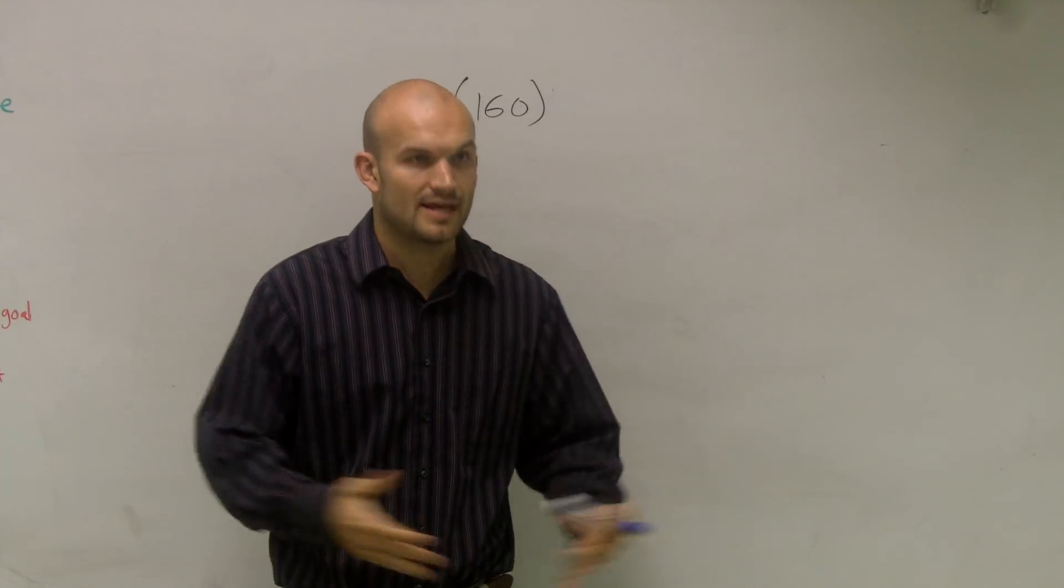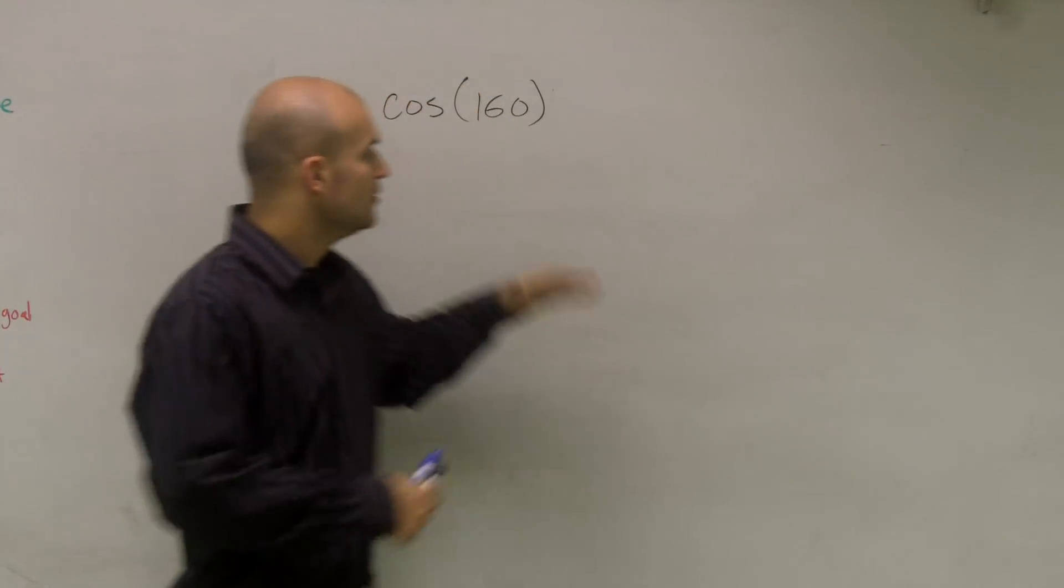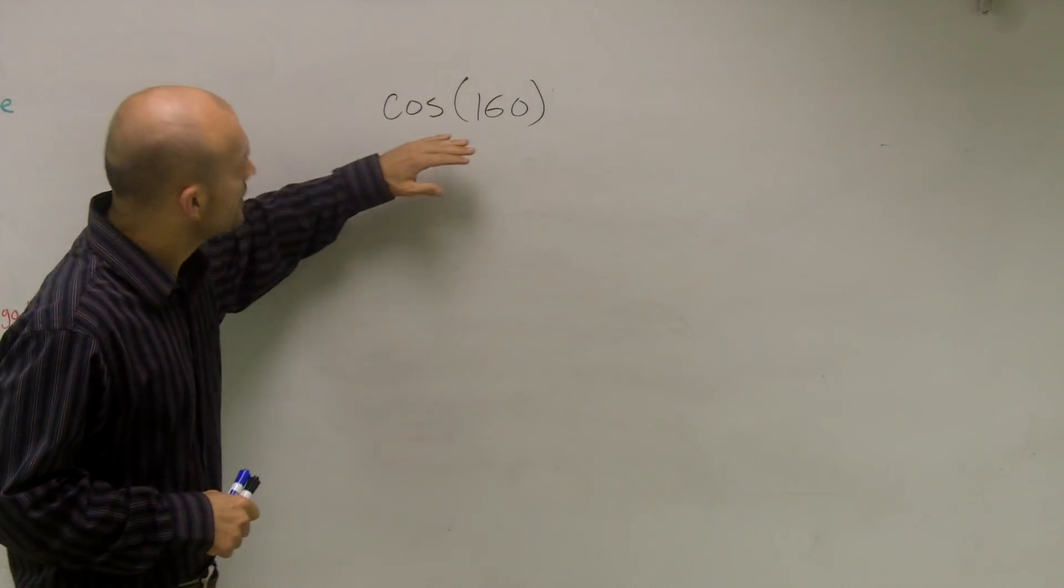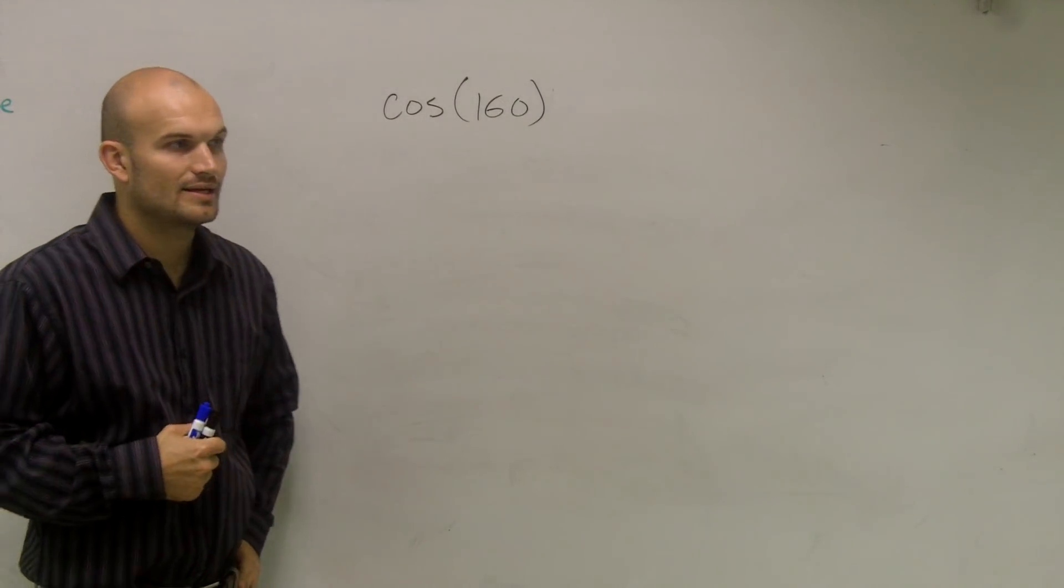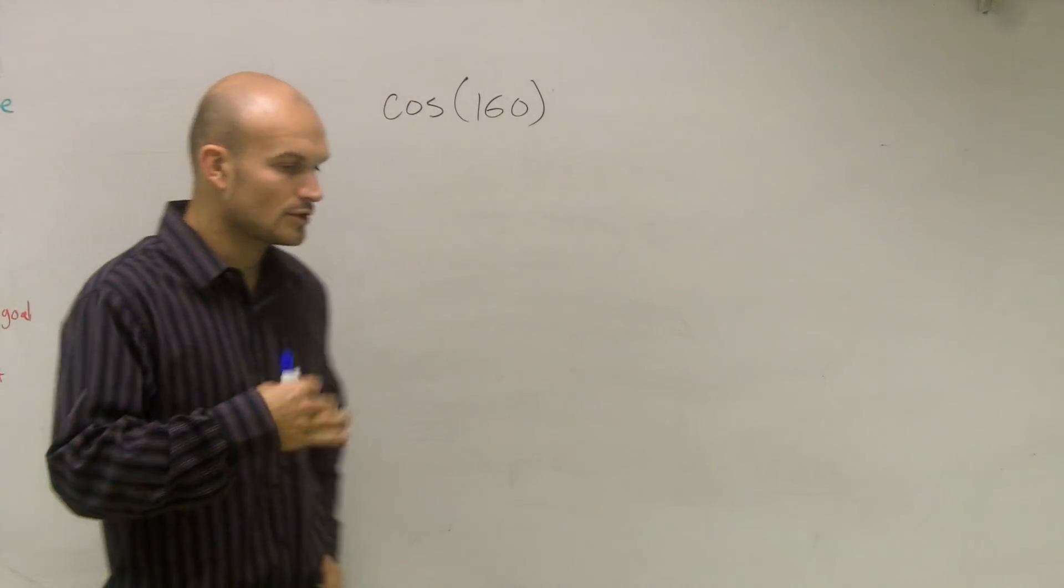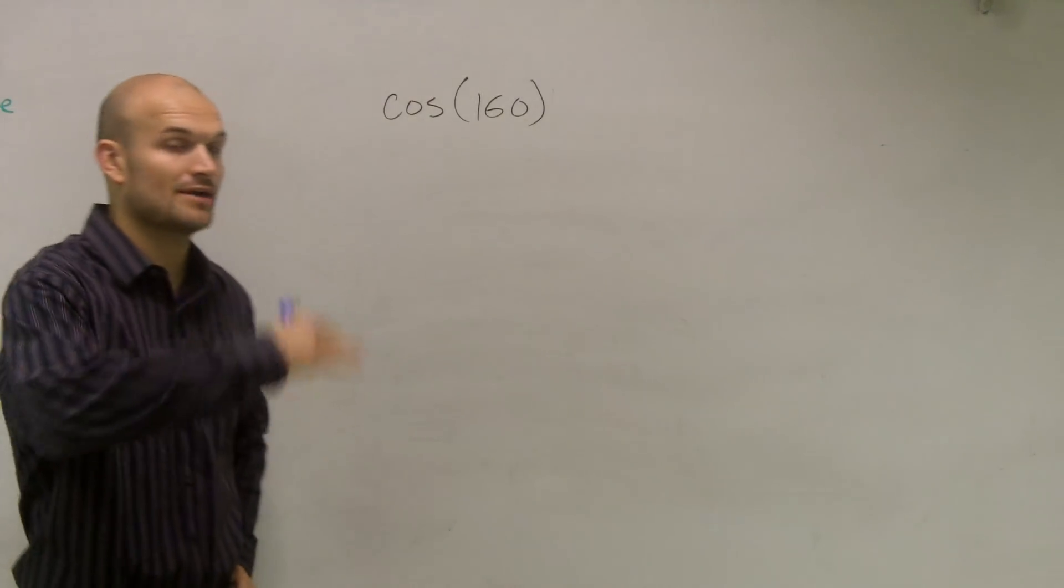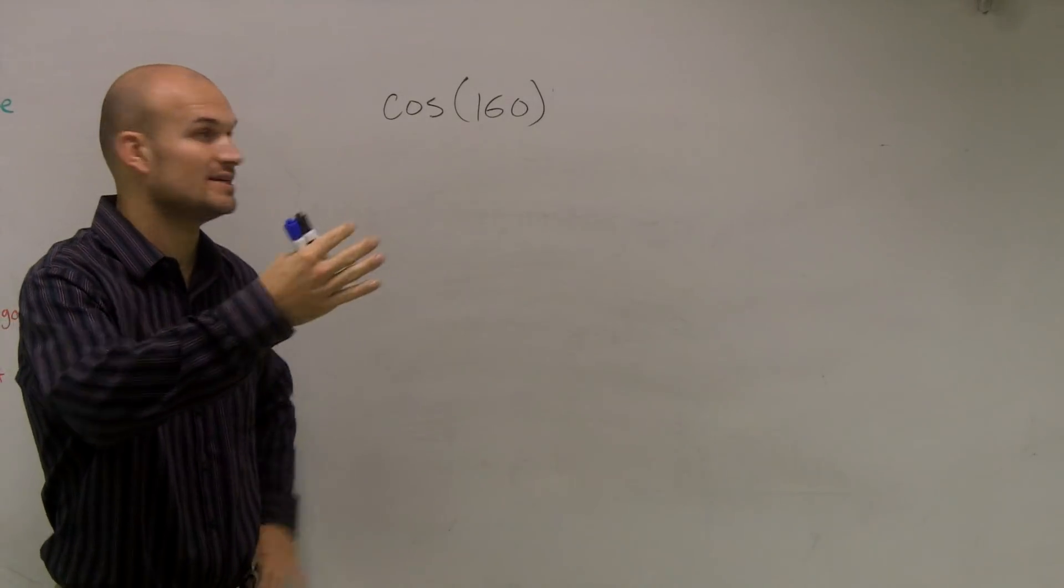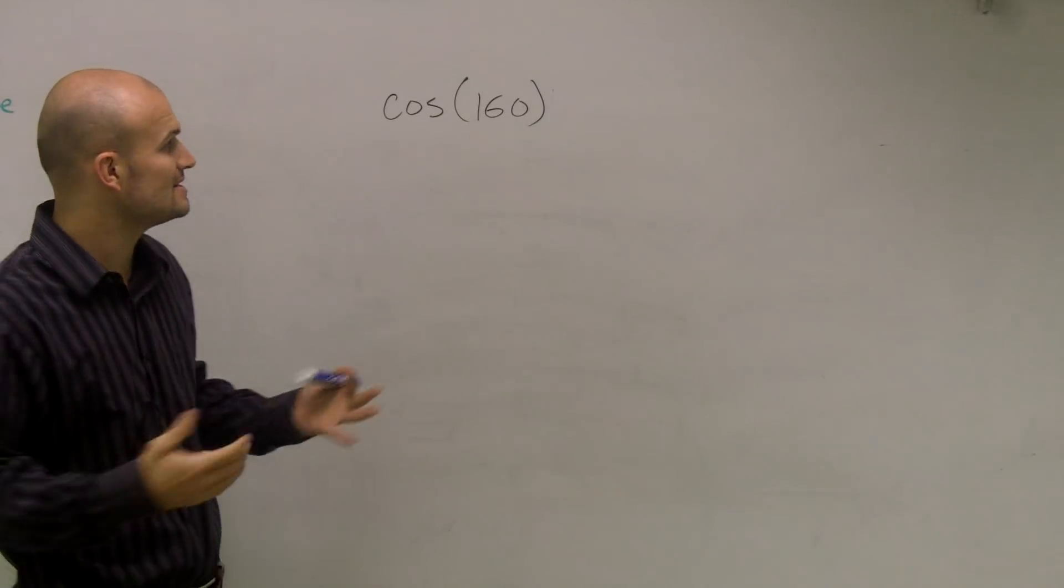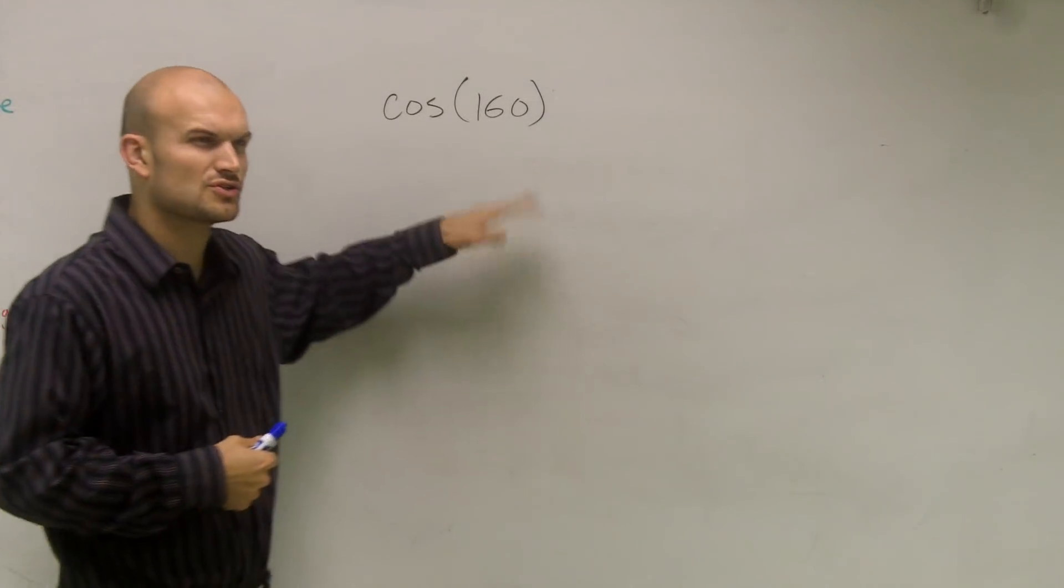We could quickly figure that out - cosine of 60 degrees is 1 half. We could figure out where it was on the unit circle and apply it. Here we have a little bit of difficulty because the cosine of 160 we can't find on the unit circle. We know 180, and if we subtract 30 degrees from that, that'd be 150. We know those two angles, but we don't know exactly what 160 is on the unit circle.